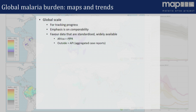Within Africa, that's tended to mean that we base all of our modeling on parasite rate — and Noor spoke a lot about parasite rate in his talk. Outside Africa, it tends to be API, annual parasite incidence, which is one of the worst misnomers in malariology. But essentially, API is just aggregated case reports — aggregated routine case reporting data: the number of cases occurring in a district, province, or region over a year, as reported by ministries of health. So that's our core input data type outside Africa.